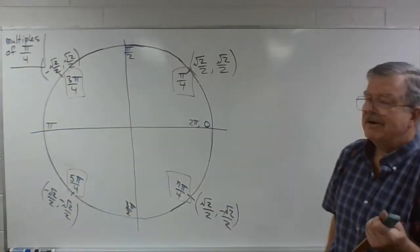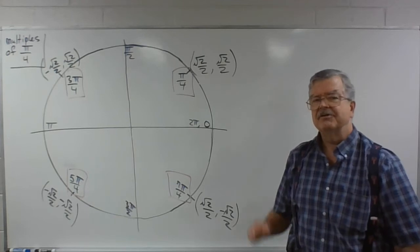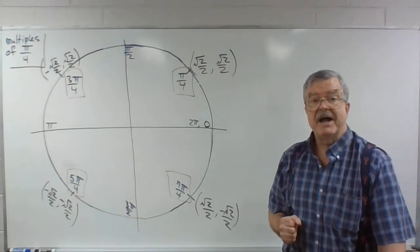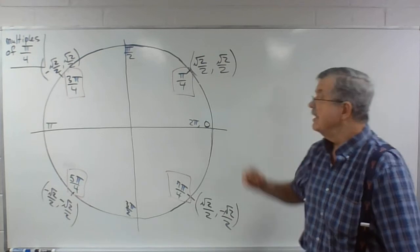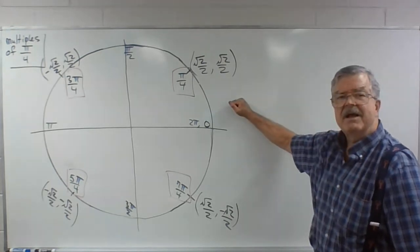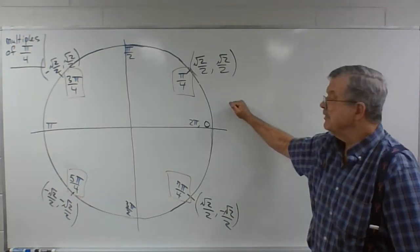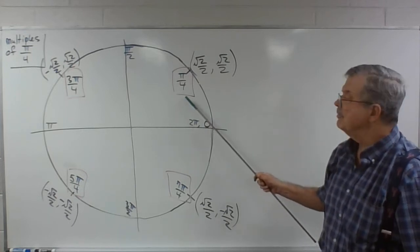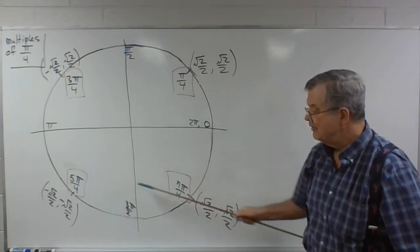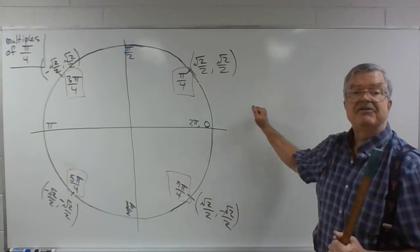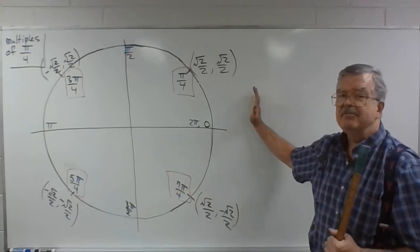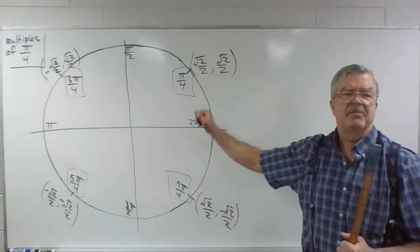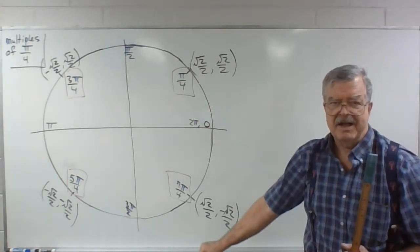In addition to practicing making unit circles with just the multiples of pi over 3 that don't reduce, practice making copies of the unit circle with the odd multiples of pi over 4 — those multiples of pi over 4 that don't reduce. Make circles just with the multiples of pi over 4 and do this several times a day for a couple of days. You'll know them for life.